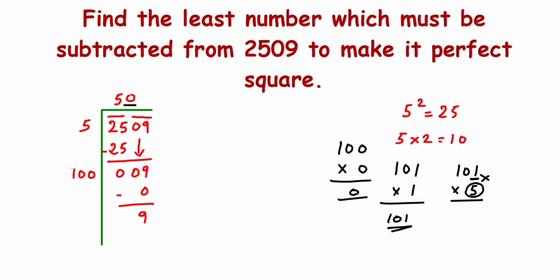I want to remove this 9 from the given number. If they're asking what will be the least number that has to be subtracted, that is nothing but the remainder you're getting. Just simply subtract the remainder from the given number.